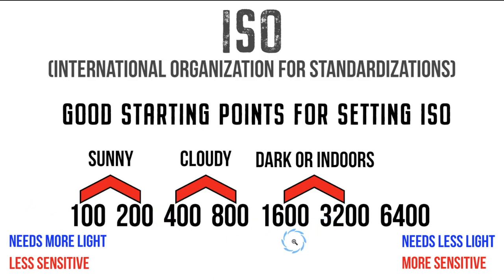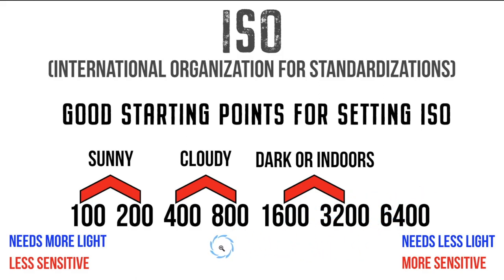This gives you a general idea of where to set your ISO when you're starting out. Most people just leave it at 100 and then try to take pictures indoors and nothing comes out — that's because you need your sensor to be more sensitive. Move your ISO up higher. Hopefully this is helpful. That's it for this video on ISO. If you found it helpful, give it a thumbs up, leave comments or questions below, and don't forget to subscribe.